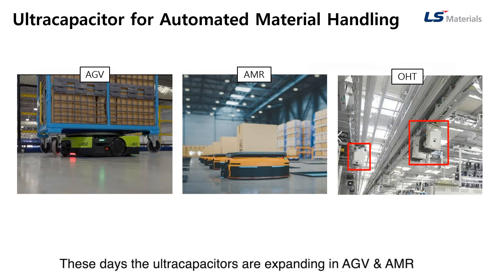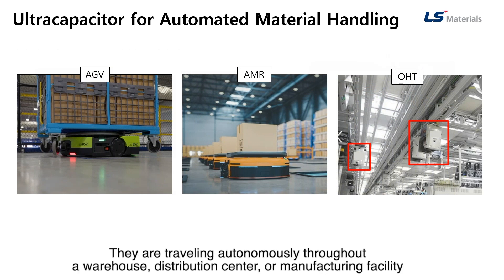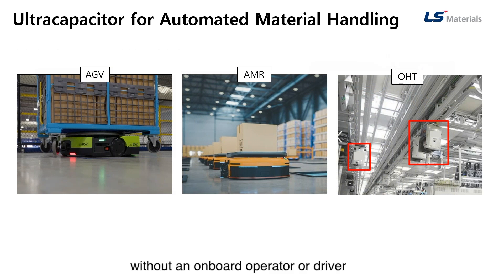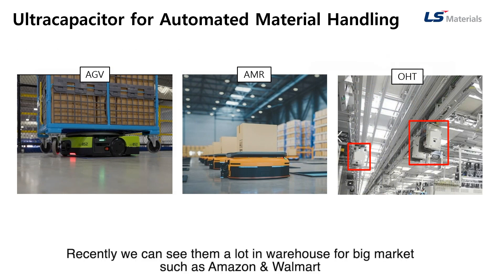These days, Ultra Capacitors are expanding into AGV and AMR. They are traveling autonomously throughout a warehouse, distribution center, or manufacturing facility without an onboard operator or driver. Recently, we can see them a lot in warehouses for big markets such as Amazon or Walmart.